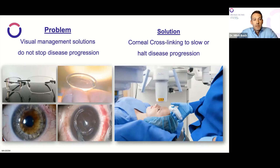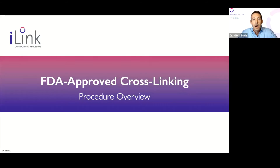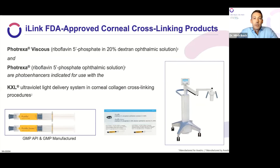Traditionally, many have used visual management solutions, but unfortunately it doesn't stop disease progression. What does is corneal collagen crosslinking using riboflavin and ultraviolet light with oxygen to stiffen the cornea, add strength, and change the biomechanics — halting disease progression. We do have an FDA-approved option for epithelium-off corneal crosslinking. The framework of corneal crosslinking is really a chemical reaction that needs three ingredients: first, riboflavin or vitamin B2 as our photosensitizer, available in the FDA-approved options of Photrexa Viscous and Photrexa. This gets soaked onto the cornea into the deep stroma. Then we add UVA light at a wavelength of 365 to 370 nanometers. And then we need oxygen — these three ingredients cause a chemical reaction to strengthen and freeze that cornea into place.